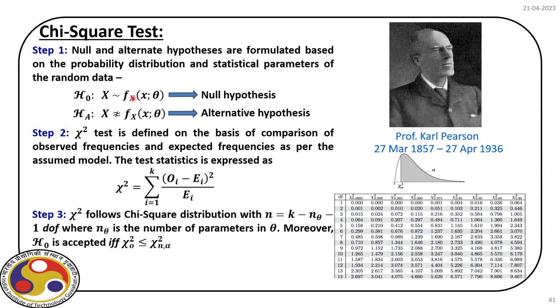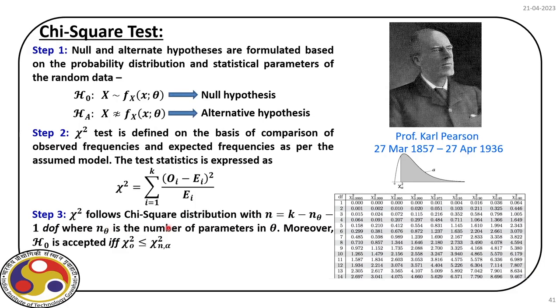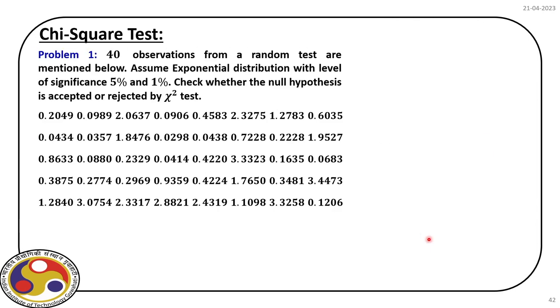Step 3 — evaluate the degrees of freedom, which is k - nθ - 1, where nθ is the number of parameters estimated for the null hypothesis. For example, if we propose a normal distribution, nθ = 2 (mean and sigma), so degrees of freedom = k - 2 - 1 = k - 3. Then we verify whether the null hypothesis is accepted — it is accepted only when the estimated chi-square value is less than the critical value from the standard chi-square table.